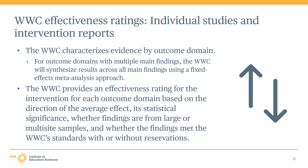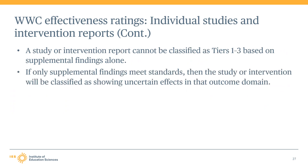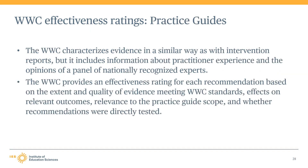The WWC provides an effectiveness rating for the intervention for each outcome domain based on the direction of the average effect, its statistical significance, whether the findings are from large samples and multi-site samples, and whether the findings met the WWC standards with or without reservations. The effectiveness ratings for individual studies and intervention reports include: strong evidence or Tier 1, moderate evidence or Tier 2, promising evidence or Tier 3, uncertain effects, and negative effects. It is important to note that a study or intervention report cannot be classified as Tier 1 through 3 based on supplemental findings alone. In cases where only supplemental findings meet standards, the study or intervention will be classified as showing uncertain effects in that outcome domain.